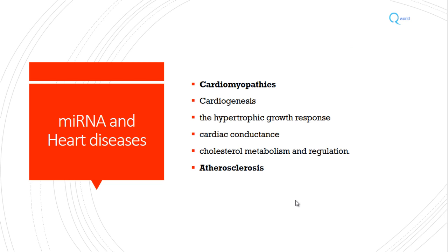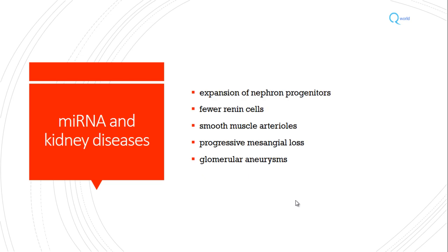Micro RNA has also been implicated in cardiomyopathies, which is surprising — it plays a role in cardiogenesis, hypertrophic growth response, cardiac conductance, and also in cholesterol metabolism and regulation. It is also associated with atherosclerosis. Additionally, expansion of nephron progenitor cells, furosemide-sensitive cells, smooth muscle arterioles, progressive mesangiolysis, and glomerular aneurysm are associated with micro RNA alterations — and that is why it also plays a role in kidney diseases.